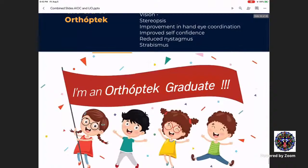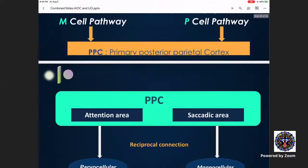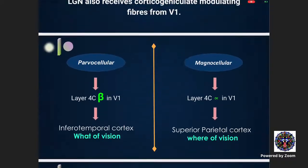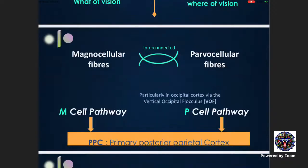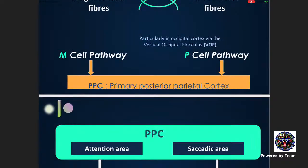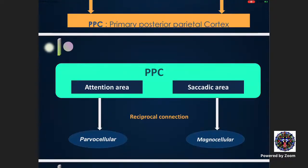From this, you can realize that most parvocellular discharge goes to layer 4C beta in V1, and most magnocellular discharge goes to layer 4C alpha in V1. However, there is an interconnection — some P fibers also go to the parietal area and some M cells go alongside parvocellular cells to 4C beta. This interconnection is what we are exploiting, in addition to the top-down impulses coming from the attention area in the parietal cortex to the parvocellular cells. The attention area is very important in the treatment of amblyopia.